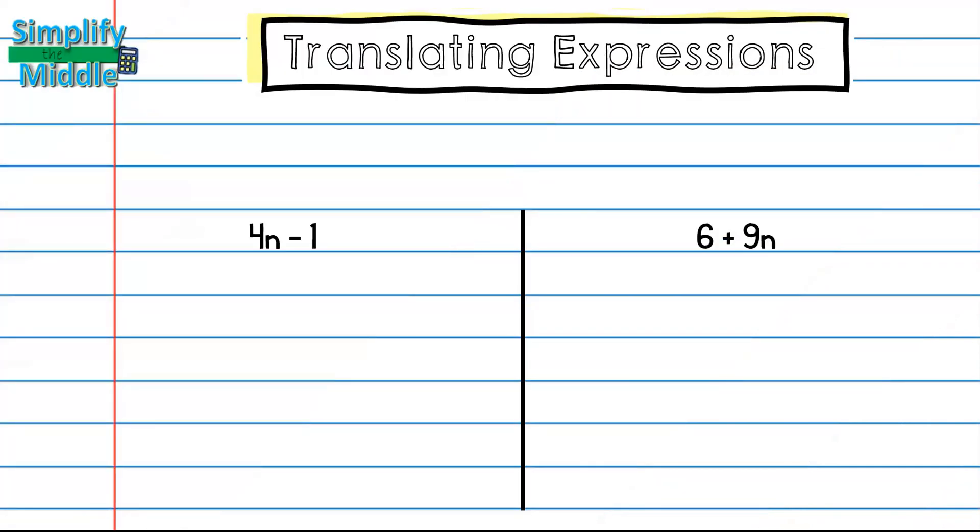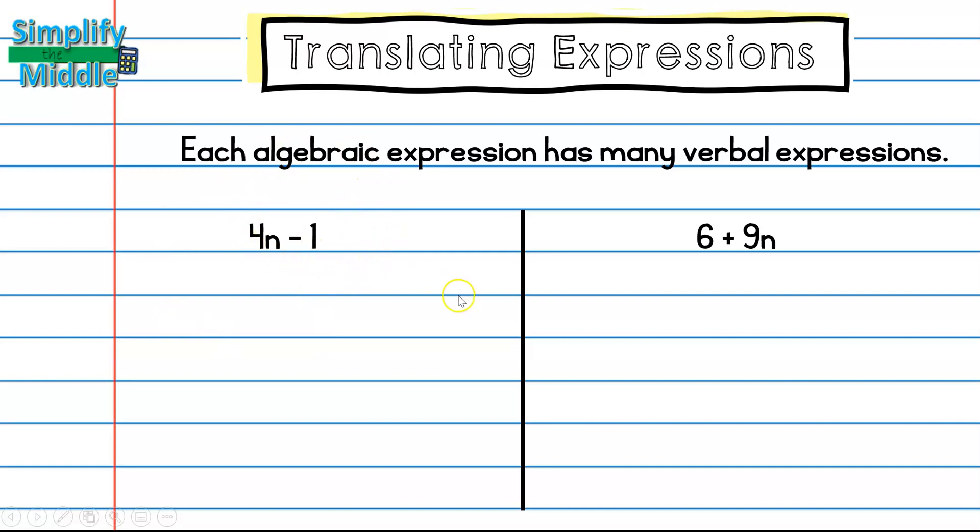When translating expressions, it's important to know that each algebraic expression has many verbal expressions. So algebraic, just meaning when I have numbers and letters in a statement, and verbal is when I write it out with words. So there's many different ways you could write 4n minus 1. Me saying 4n minus 1 is an example. But here we have a number times four less one. So I know I have a variable times four, which is right here. Less means to subtract one.